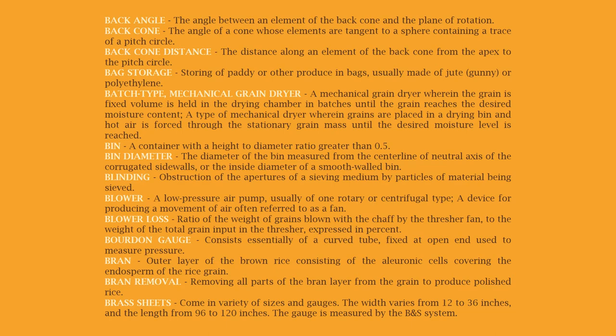Blower loss: the ratio of the weight of grains blown with the chaff by the thresher fan to the weight of the total grain input in the thresher, expressed in percent. Board and gauge: consists essentially of a curved tube fixed at an open end, used to measure pressure.